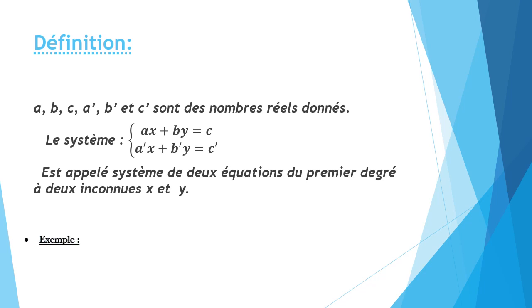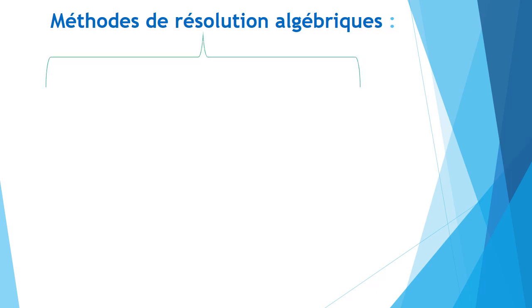L'exemple suivant représente un système de deux équations du premier degré à deux inconnus X et Y. Comment résoudre un système d'équations? Il existe deux méthodes de résolution algébriques: la méthode de substitution et la résolution par la combinaison linéaire.